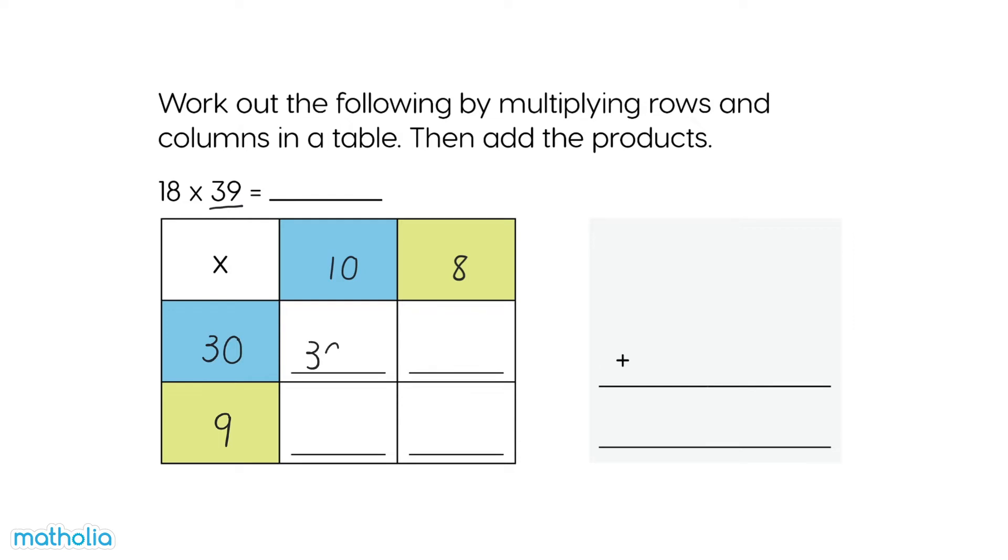30 times 10 equals 300. 30 times 8 equals 240. 9 times 10 equals 90, and 9 times 8 equals 72.